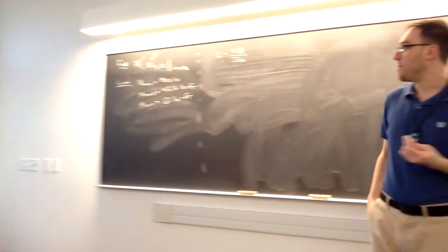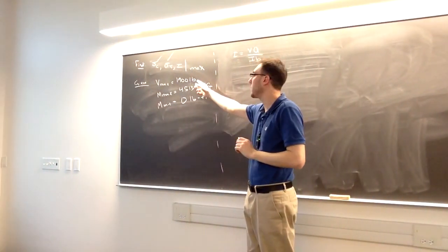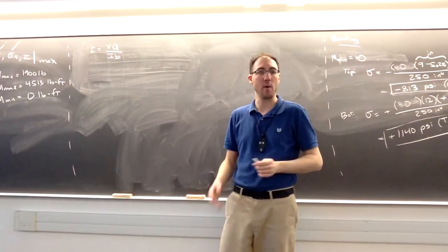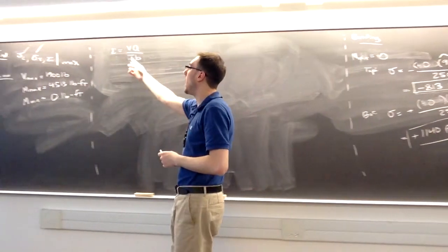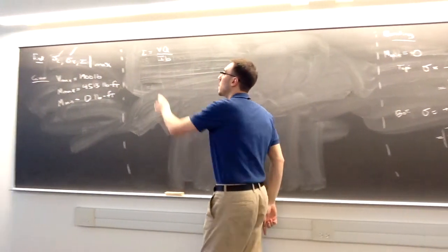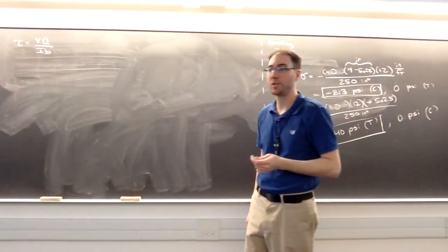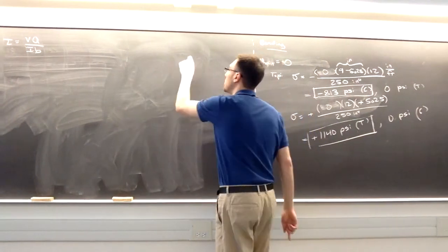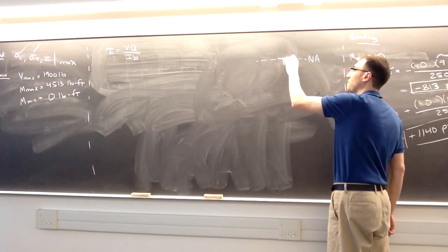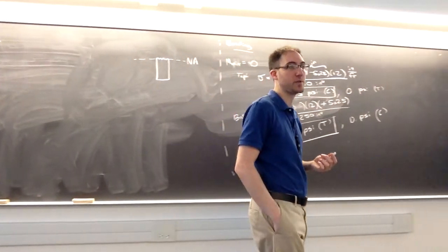For shear stress, the absolute maximum value of V was 1,900 pounds — positive or negative doesn't matter, just the absolute maximum. I already know I equals 250. I need to calculate Q and B. Since I'm looking for maximum shear stress, that occurs at the neutral axis. I can keep everything below the neutral axis as my mini shape, which is just a rectangle — 5.25 inches high and 3 inches wide.